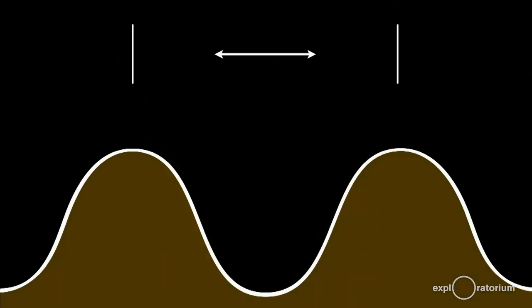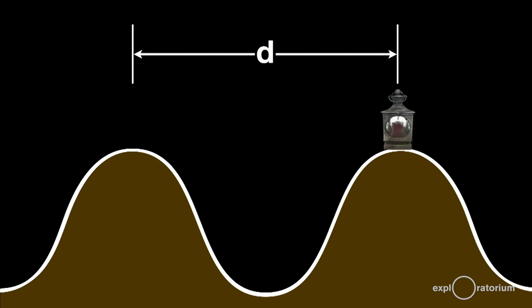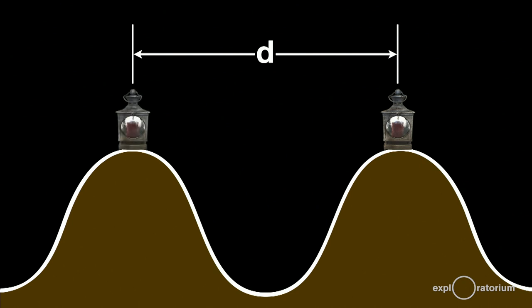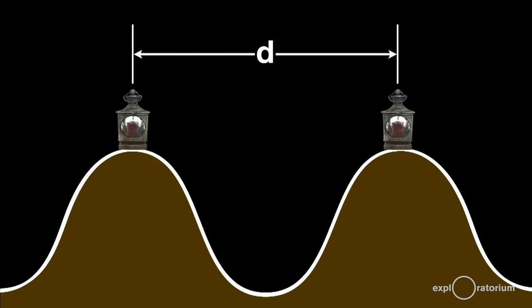Galileo first attempted to measure the speed of light by measuring the distance between two hilltops. He sent his assistant to the far hilltop with a shuttered lantern. The plan was for Galileo to open the shutter of his lantern and for his assistant to open his lamp as soon as he saw the light from Galileo's. Using his pulse for timing — there were no clocks yet — Galileo planned to measure the time light took to travel back and forth between the two hills.